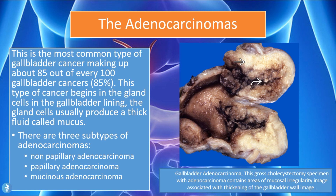If we take a closer look at this image on the right side of the screen, this is what a gallbladder adenocarcinoma looks like — a gross specimen visible to the eye. This is a cholecystectomy specimen, meaning the gallbladder has been removed from the patient. It shows an adenocarcinoma containing areas of mucosal irregularity and thickening of the gallbladder walls, showing the cancer that has grown and invaded the walls.